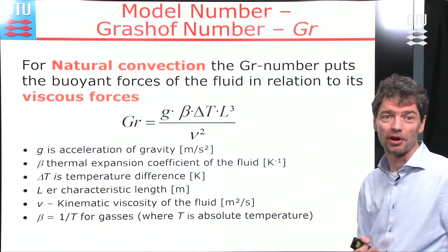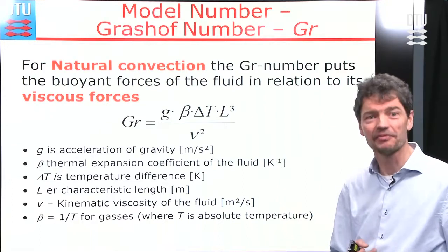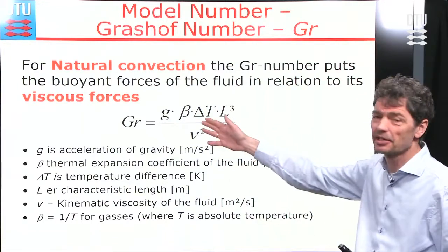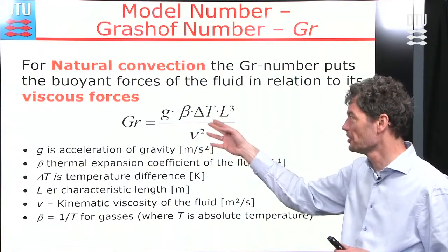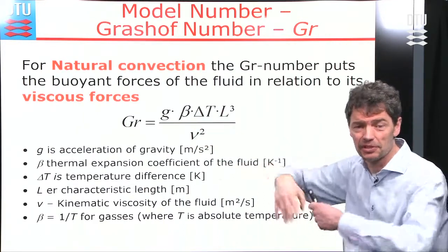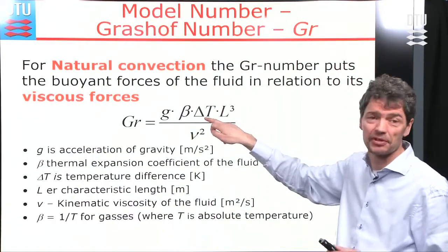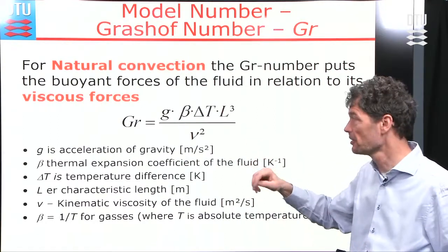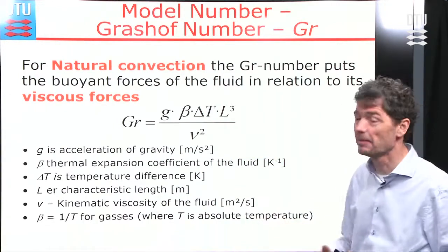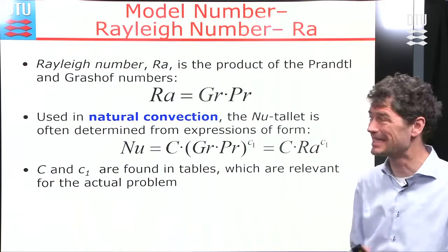For natural convection calculations, we need the Grashof number. It is defined as: the acceleration of gravity, multiplied by the thermal expansion coefficient, multiplied by the temperature difference, multiplied by the characteristic length raised to the power of 3, all divided by the square of the kinematic viscosity of the fluid.